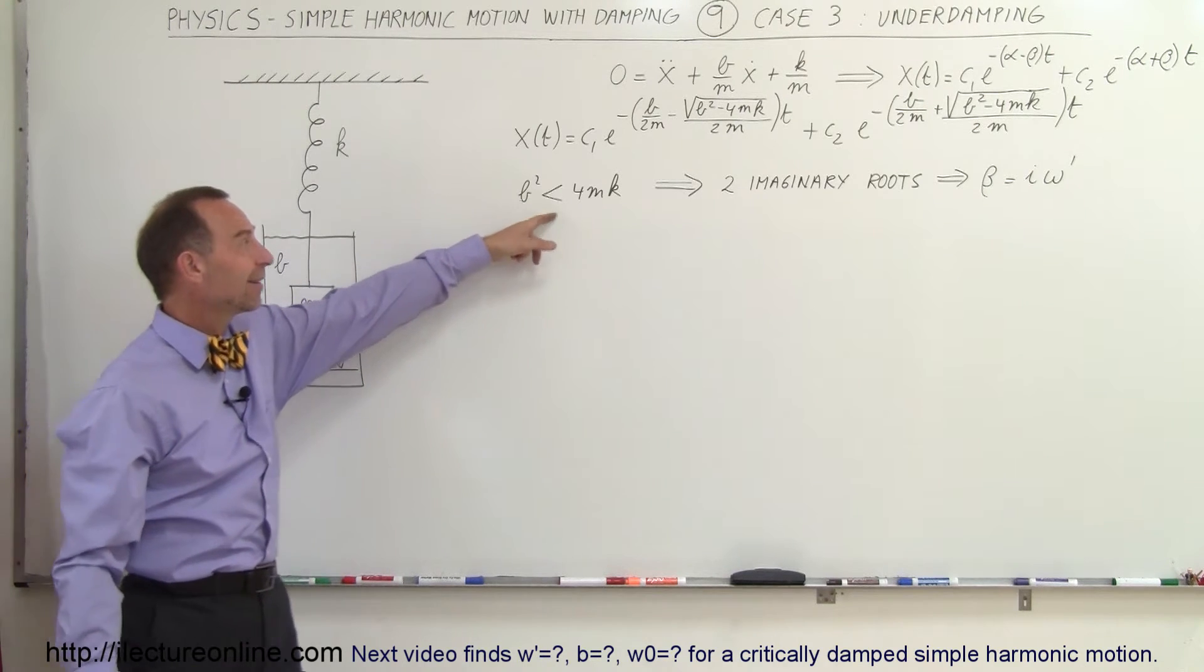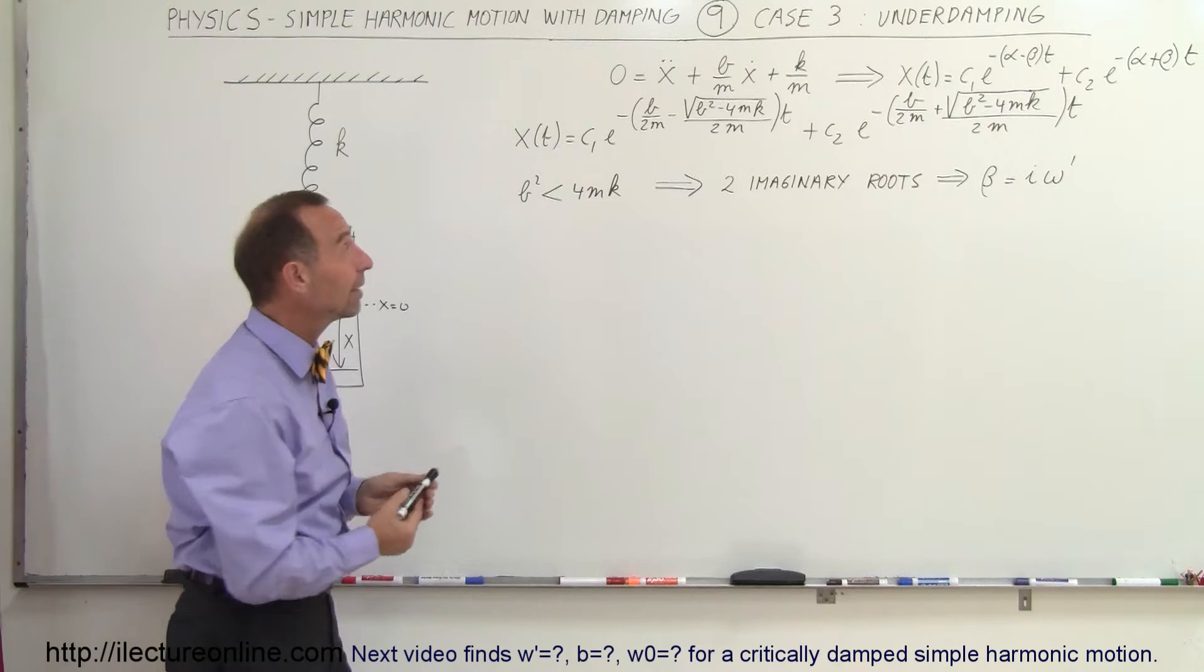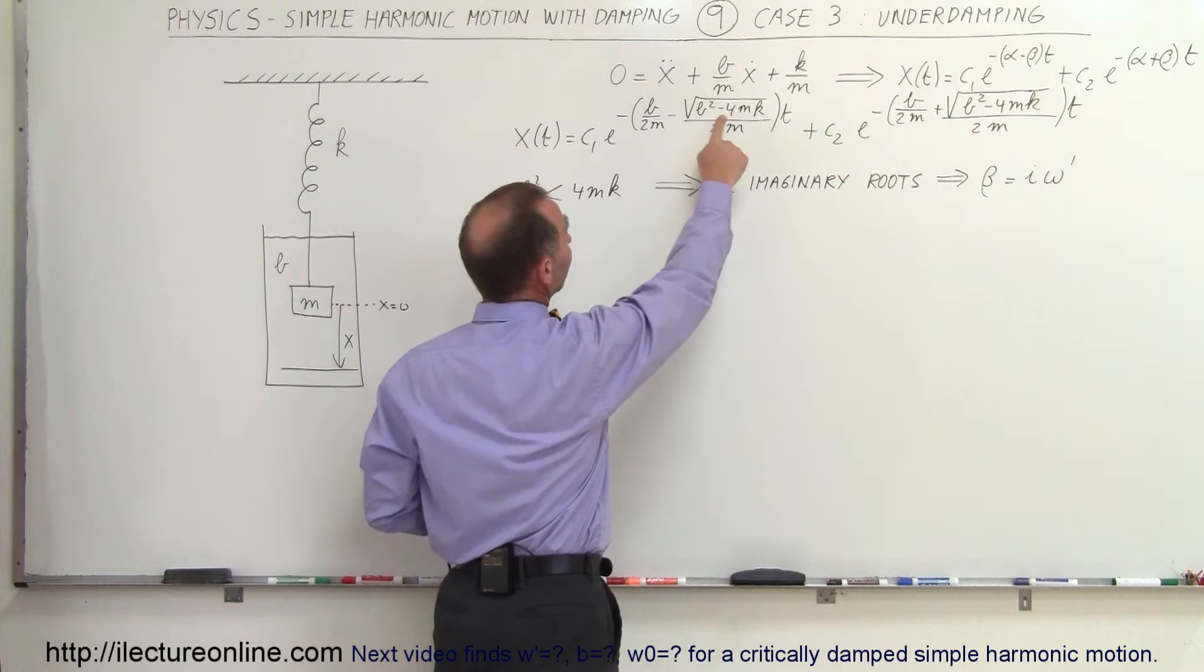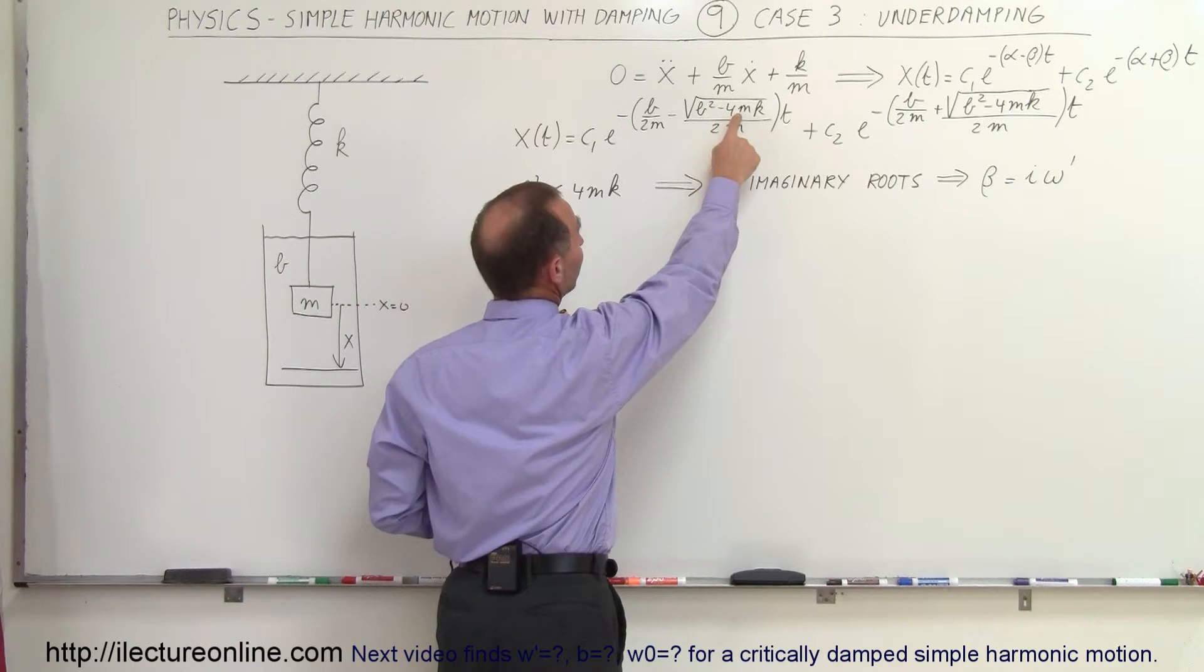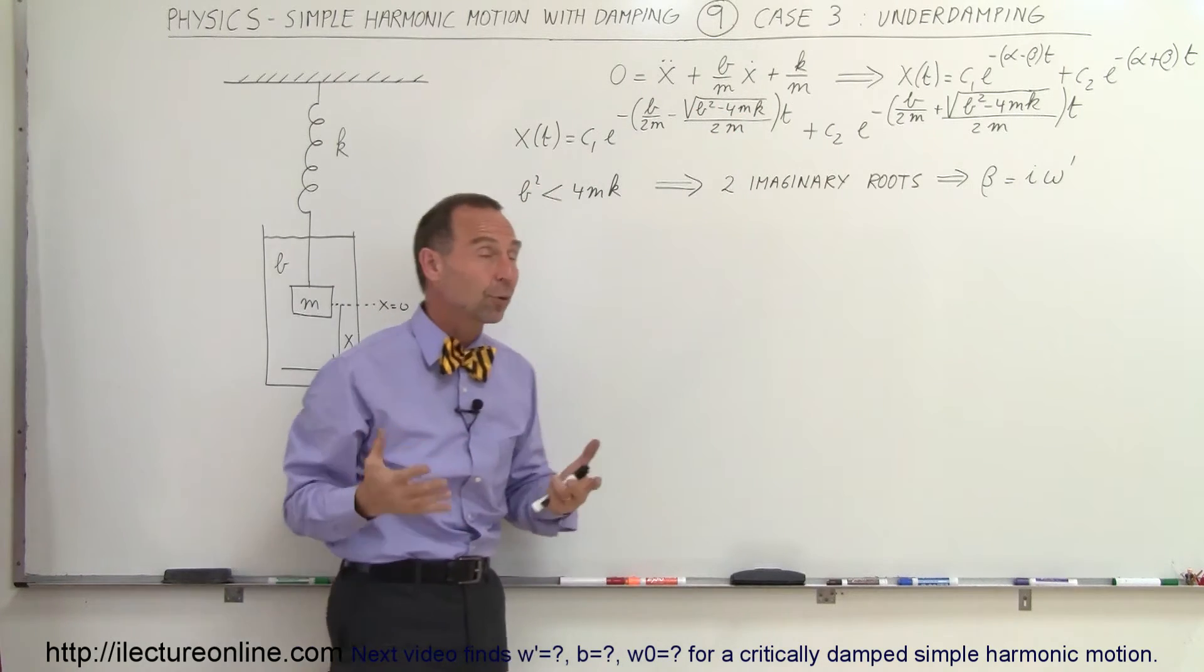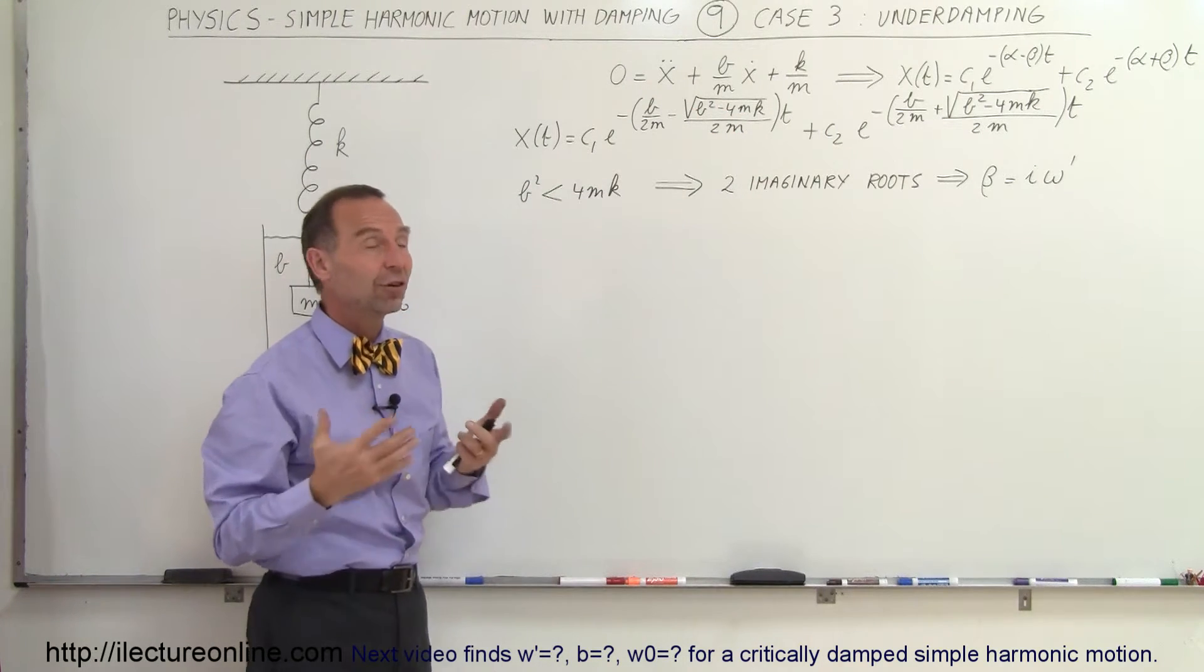That's the case where B squared is less than 4mk. The reason why that is special is when we look at the radical here, if B squared is less than 4mk and we're subtracting 4mk from B squared, we get a negative quantity which makes that an imaginary number.